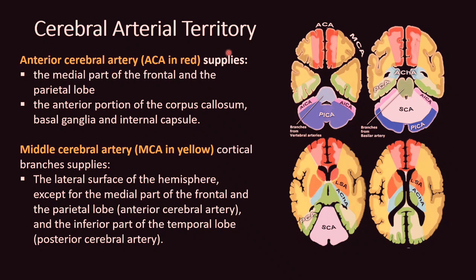The ACA supplies the medial part of the frontal and parietal lobes, the anterior portion of the corpus callosum, basal ganglia, and internal capsule. The MCA supplies most of the lateral surface of the cerebrum, except for the medial parts of the frontal and parietal lobes supplied by the ACA, and the inferior part of the temporal lobe supplied by the posterior cerebral artery.